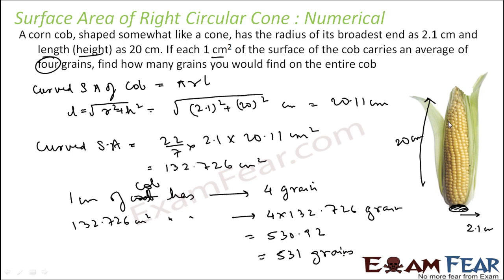So this was, it is mentioned that it looks like a corn. Keyword here is cone. And the length, the height of the cone was given. The radius of the cone was given. And it was mentioned that average 1 cm square surface area of the cone will have 4 grains and with that we could actually find the number of grains in the whole corn cob.